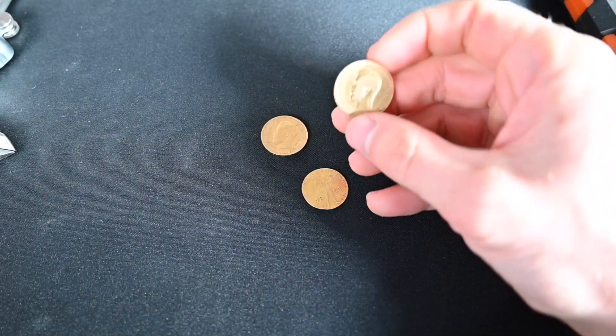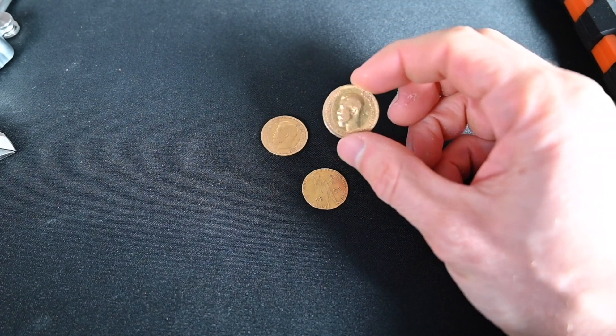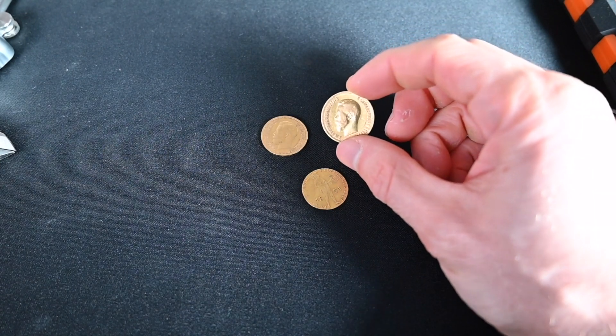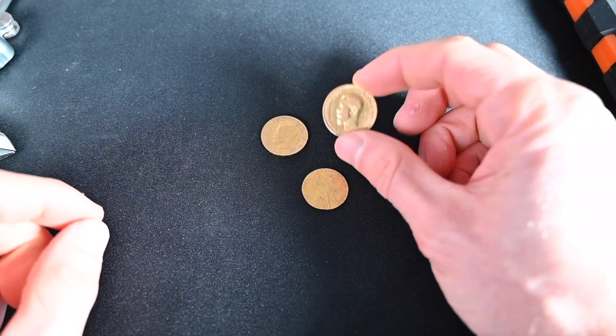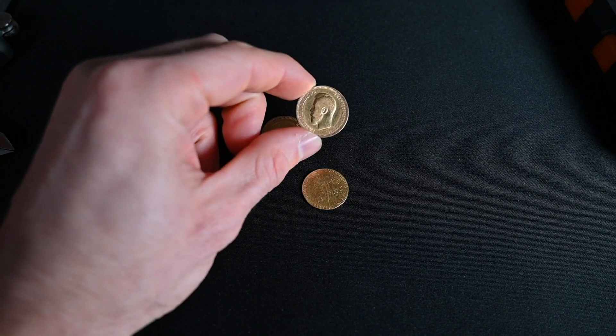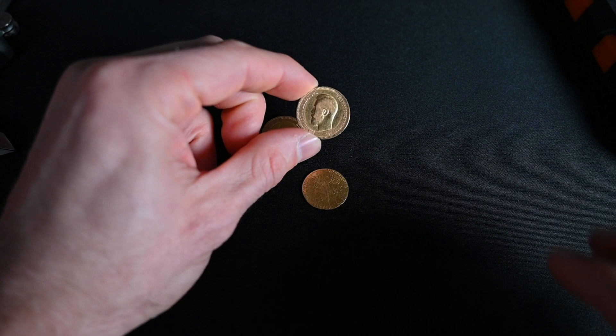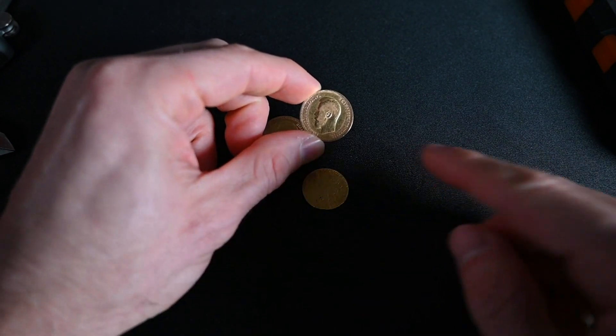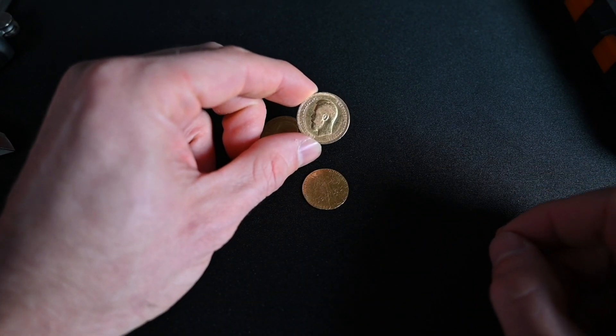So with gold coins, it's actually fairly easy to determine whether or not they're legit because gold is such a dense metal that there are very few other metals that you could confuse gold with. Meaning, even if you took lead, let's say you tried to make this same coin out of lead and gold plated, it would, in order for it to be the same weight because gold is so dense, you would have to make the lead coin significantly wider.